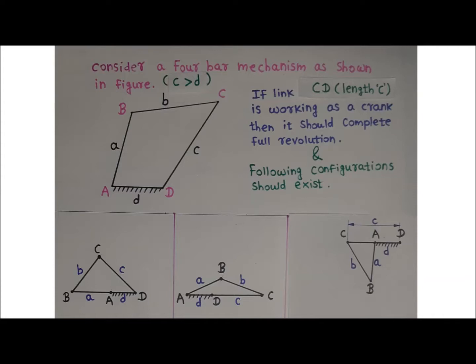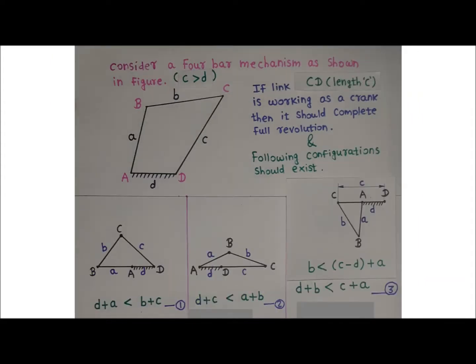If all these configurations exist, link CD of length c will work as a crank. The first configuration exists if d + a < b + c; the second if d + c < a + b. The third configuration exists if b < c − d + a, which rearranges to d + b < c + a. These are labelled expressions 1, 2, and 3.